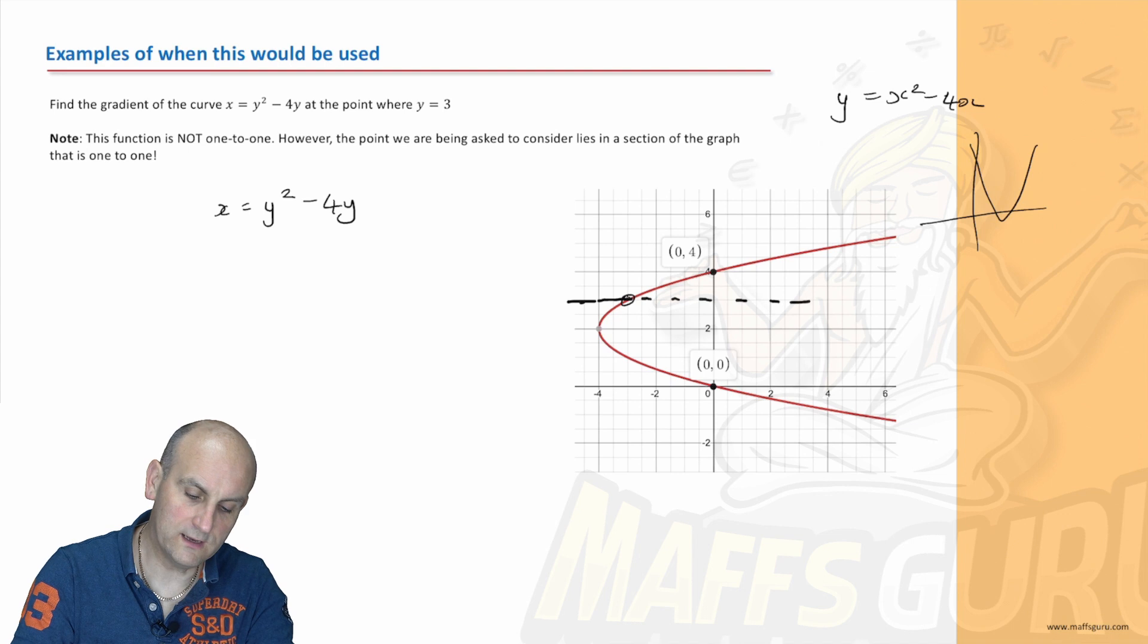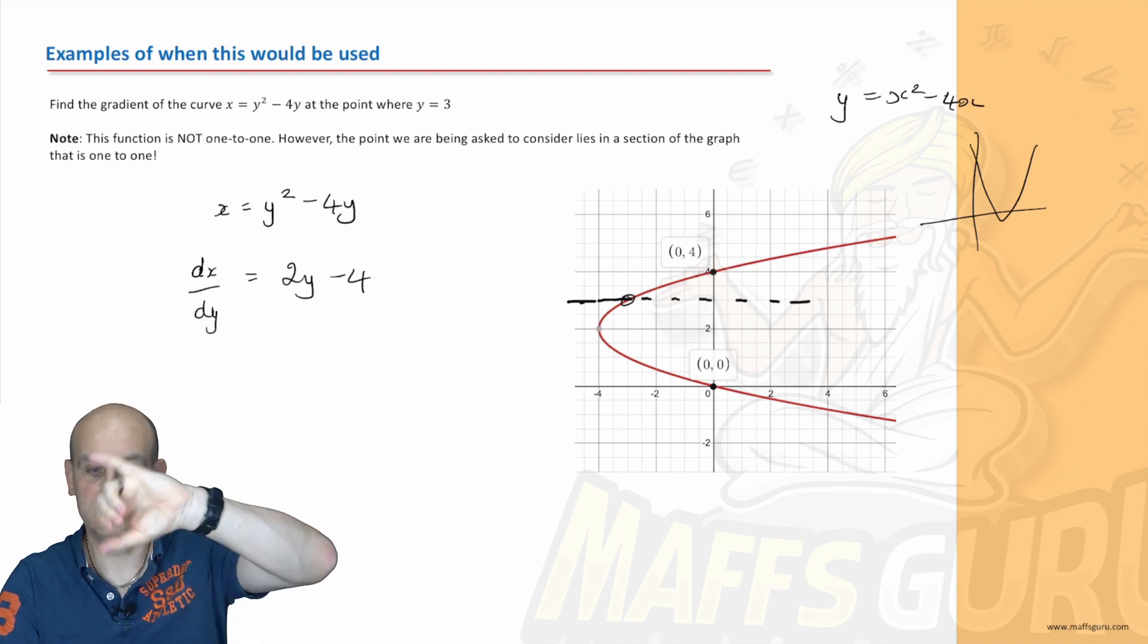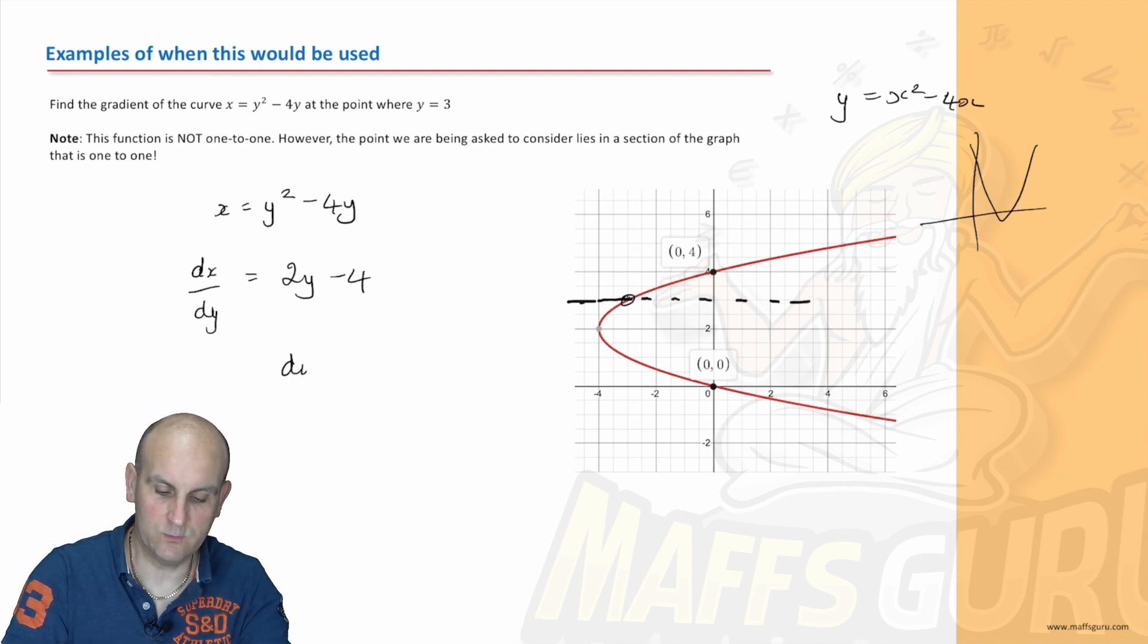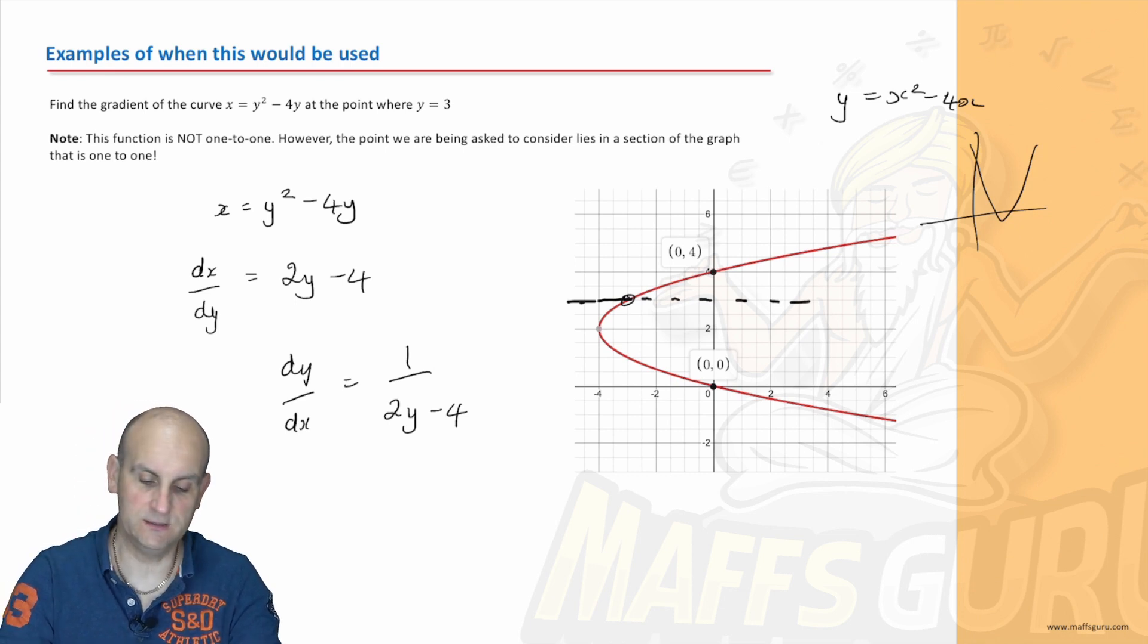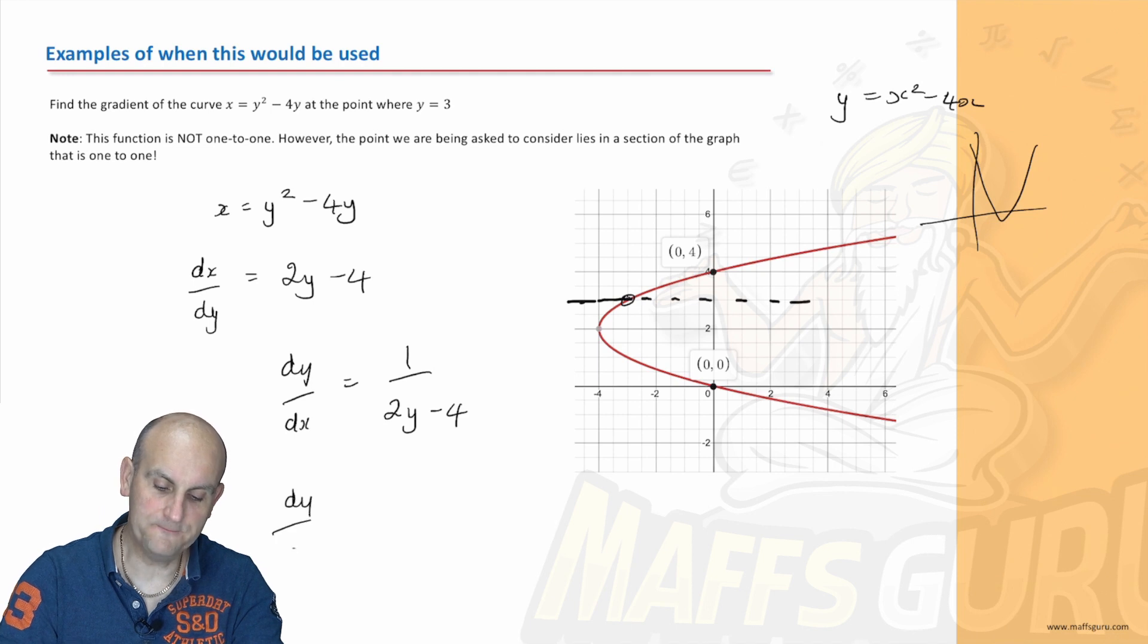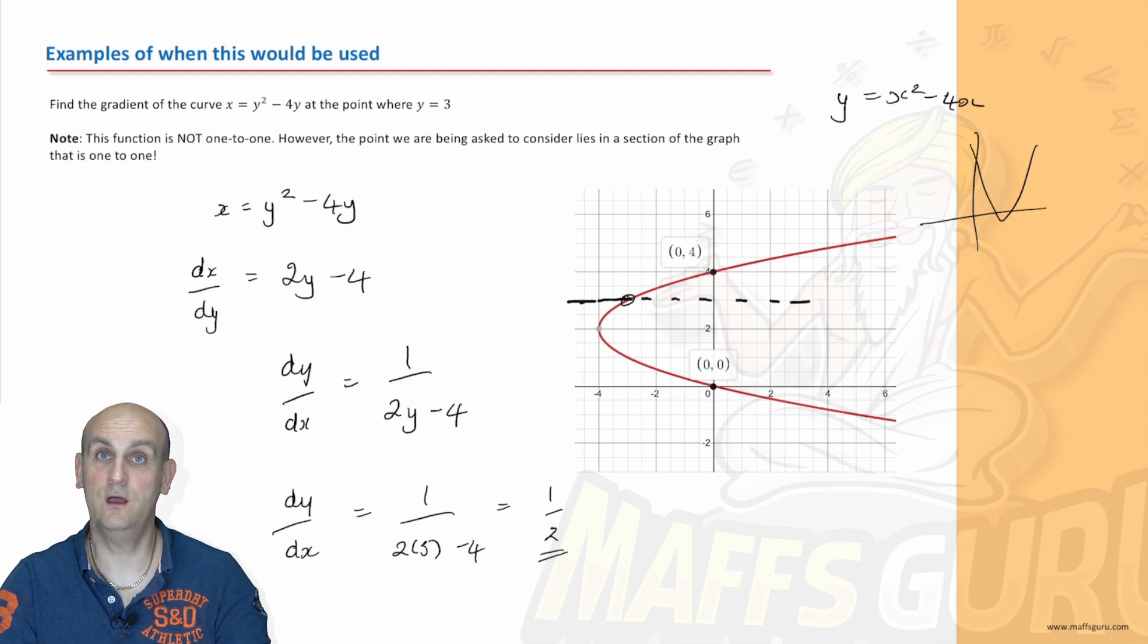And so we will now say, right, so we've got dx by dy is equal to 2y minus 4. Reciprocate. And what do we get? We get dy by dx is equal to 1 on 2y minus 4. Ka-ching, I'm thanking you very much. So we know the y value now is 3. Absolutely. So we now know that dy by dx is going to be 1 on 2 times 3 minus 4, which is 6 minus 4, which gives me the great value of a half.